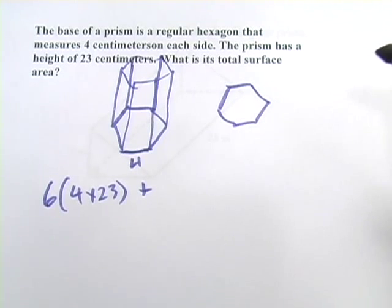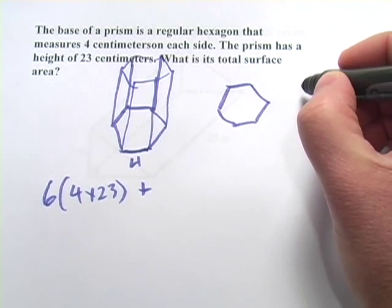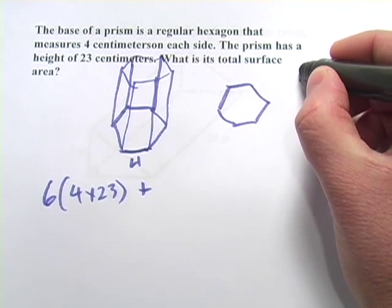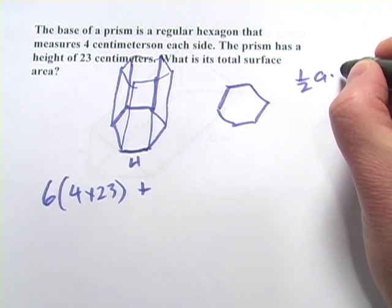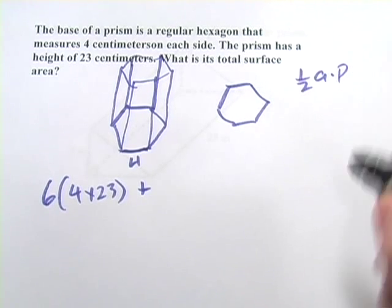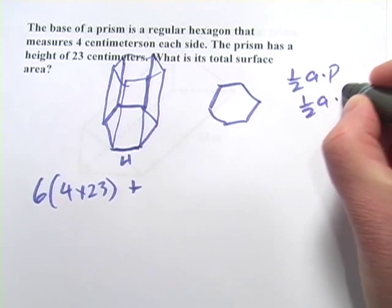You may remember that the area of a hexagon, or a regular hexagon, or any regular polygon, is going to be 1 half the apothem times the perimeter. So the perimeter is easy enough. That's 6 times 4, 1 half the apothem times 24.